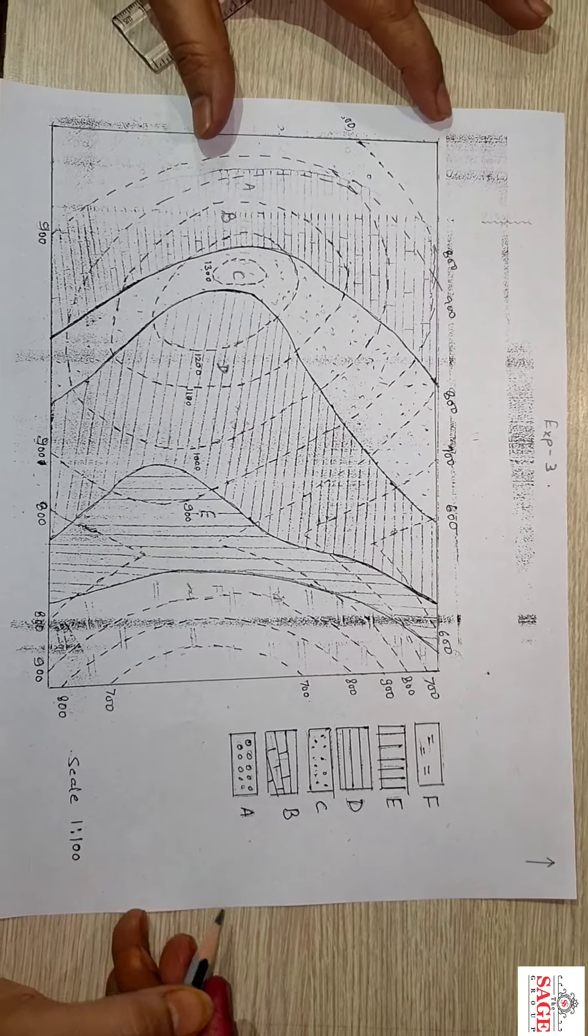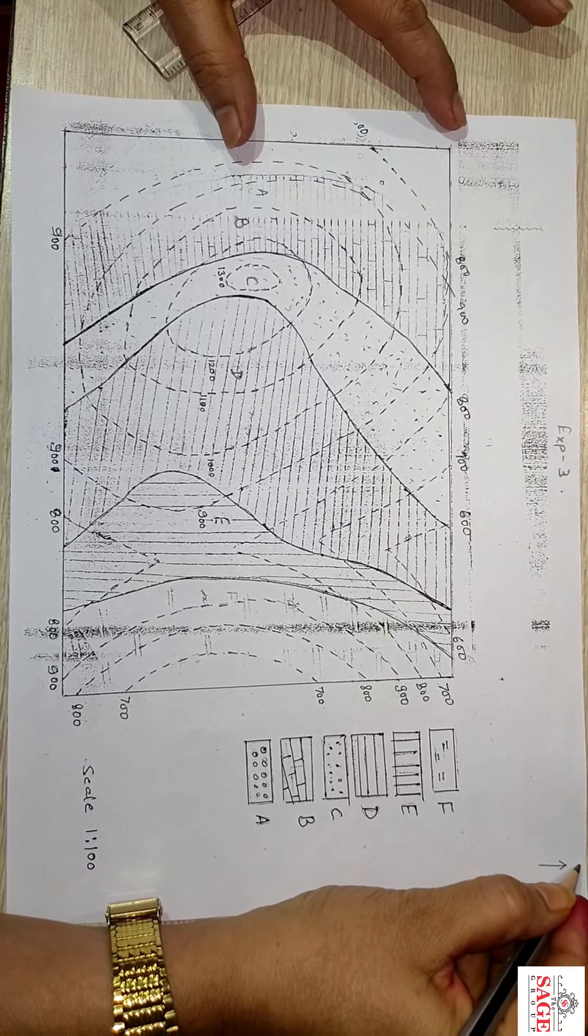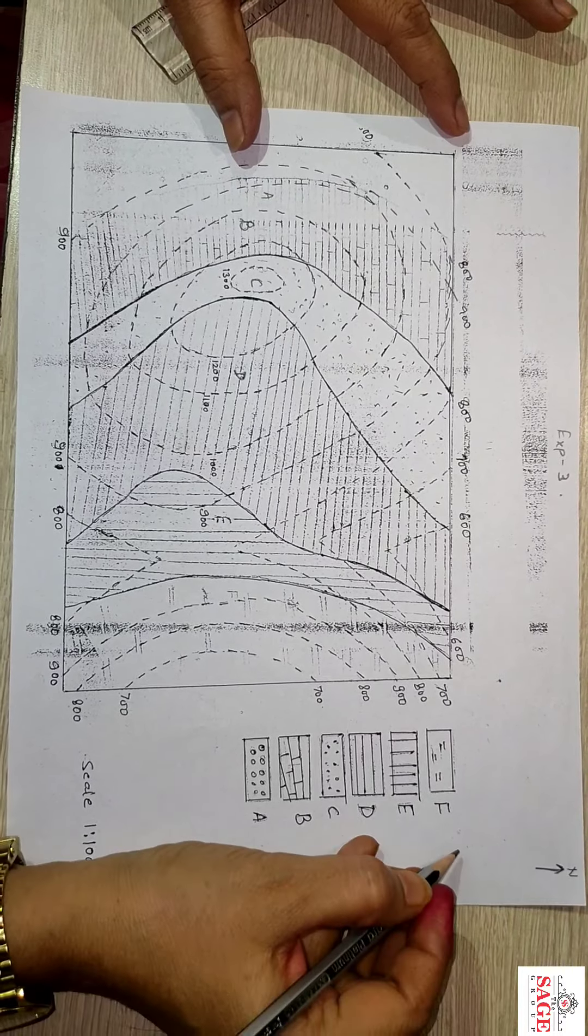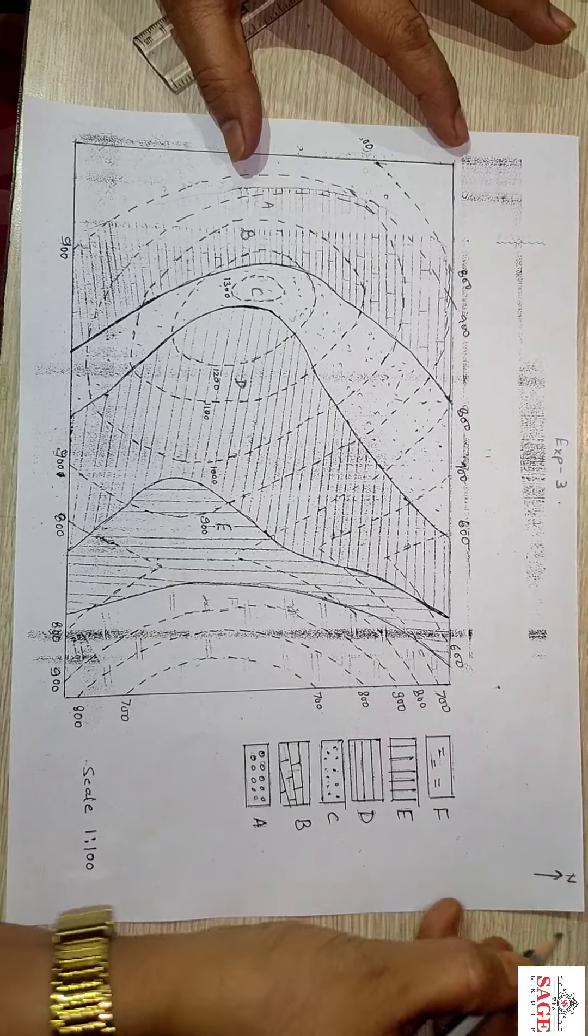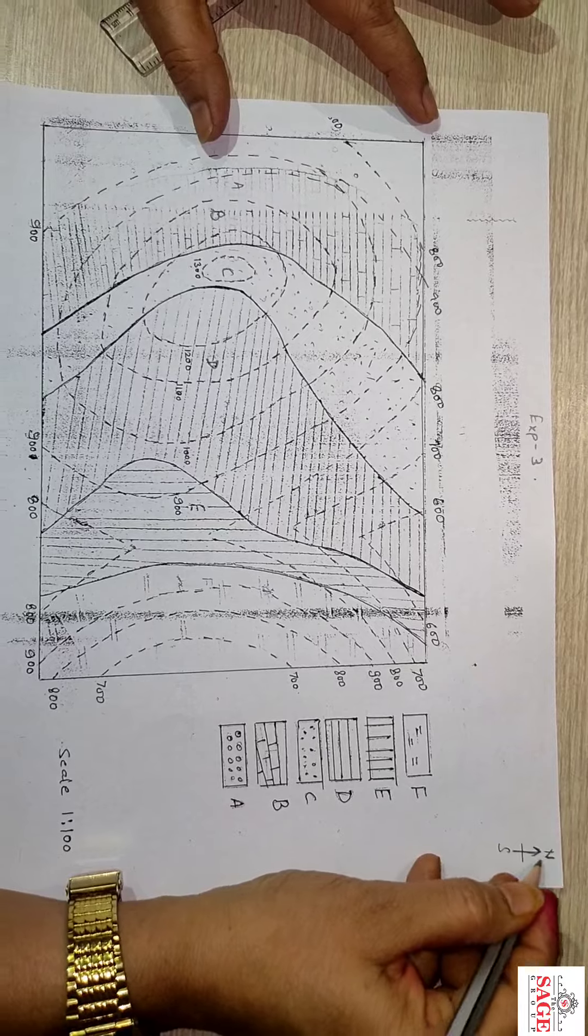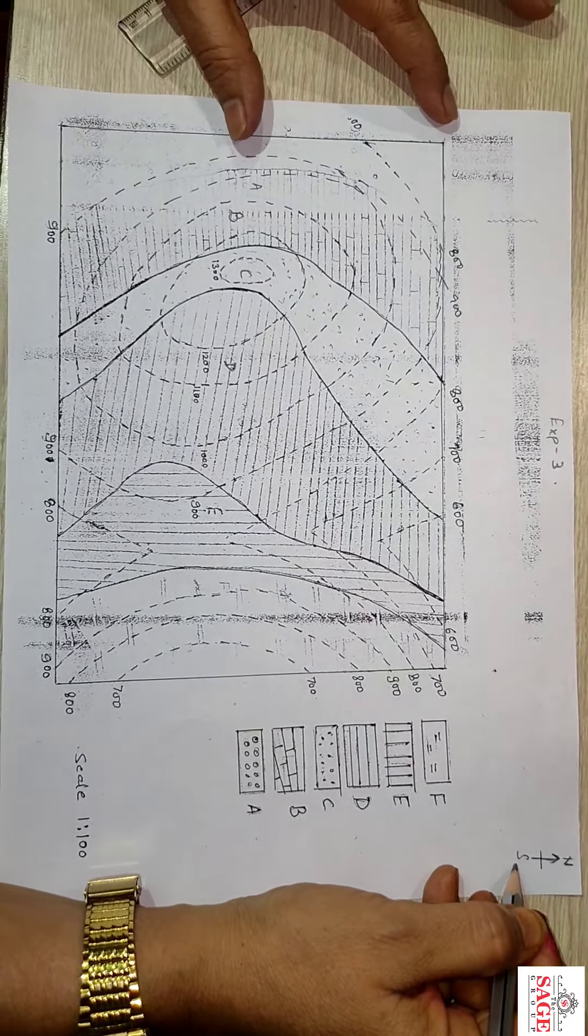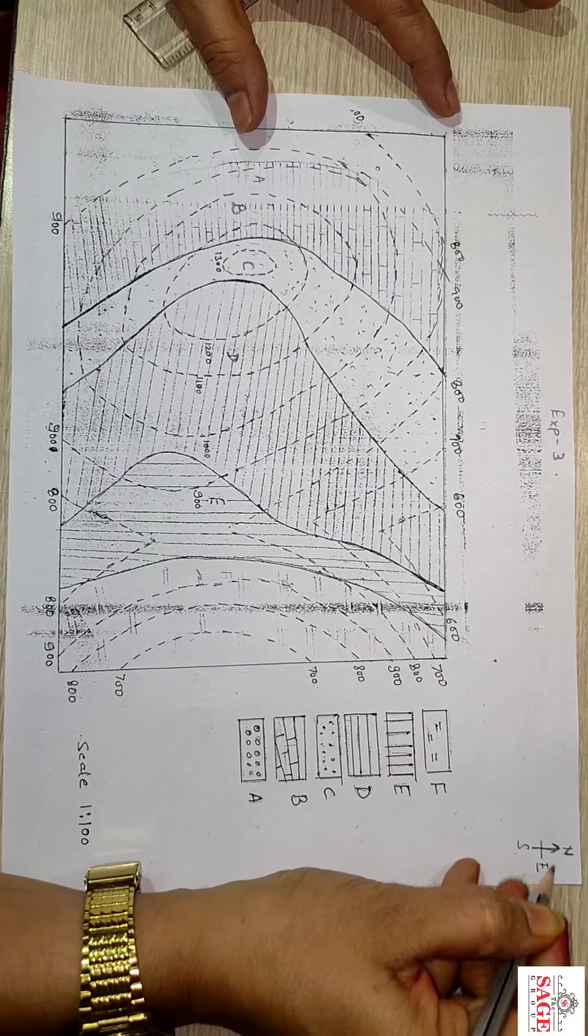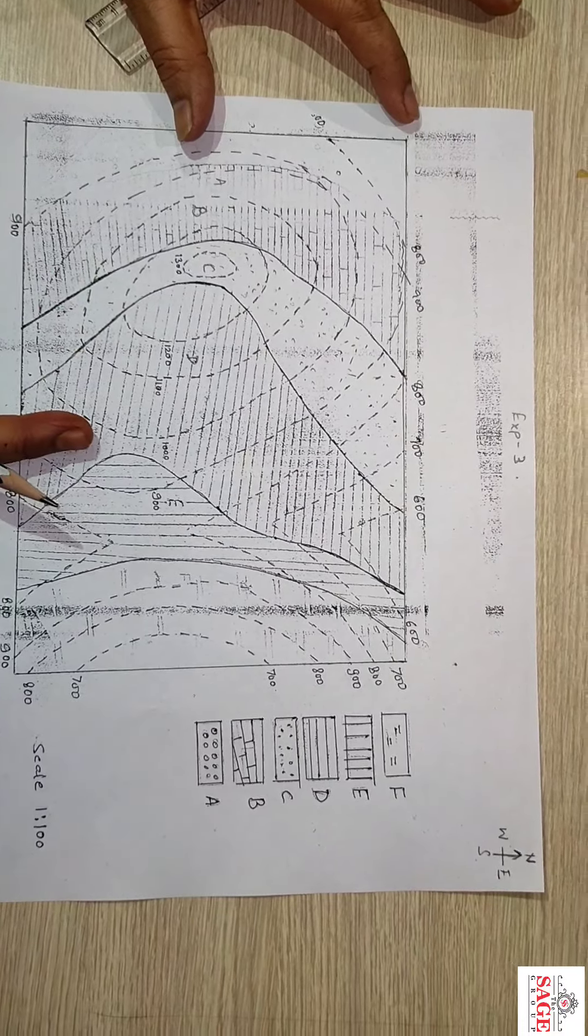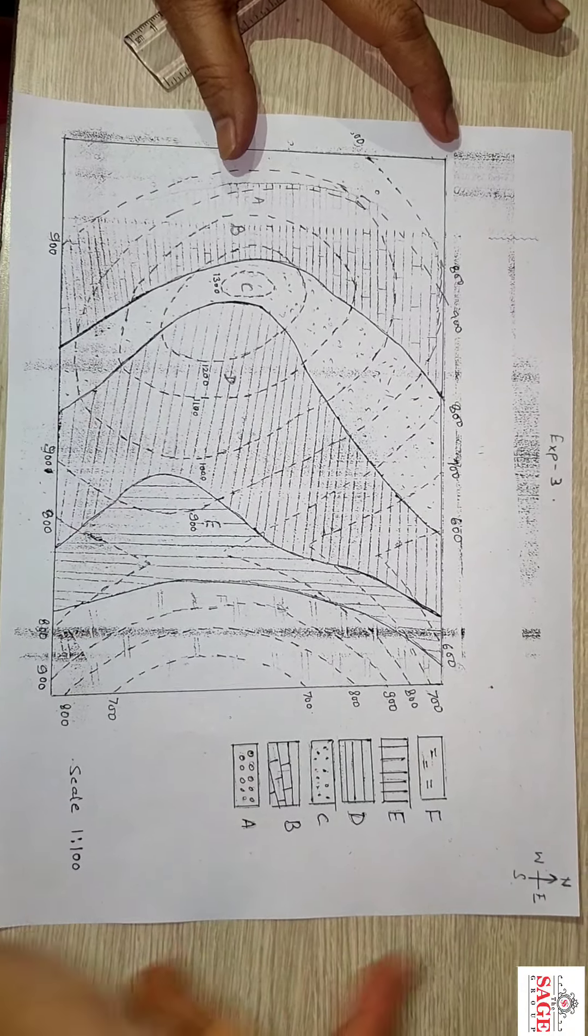To denote the direction first, what we have to do? We have to mark the direction. Just put an arrow in the side and put the north so that afterward the direction can be set. In this way this side is north and this one automatically becomes south. Then it will become east and this will become west. These all orientations of the contours are towards the east side.